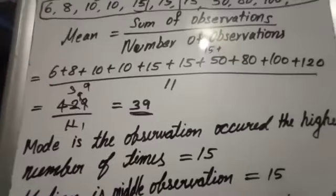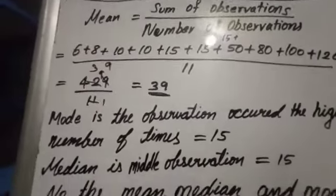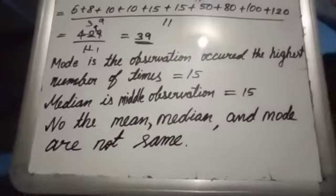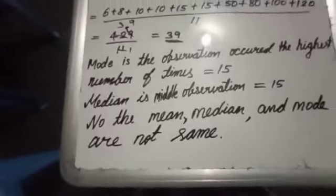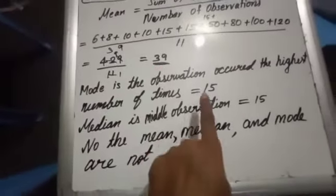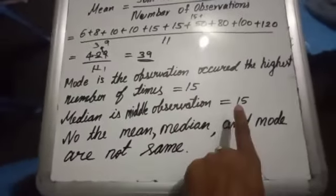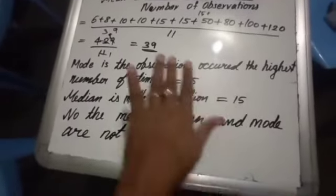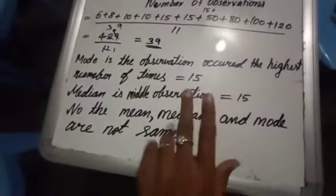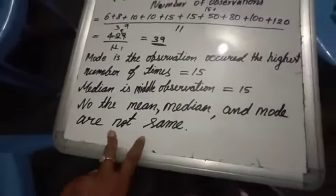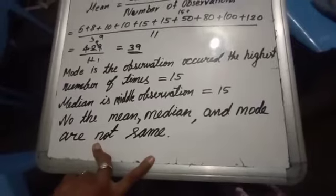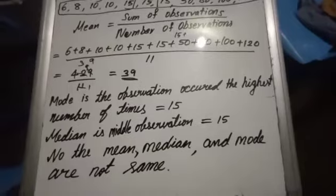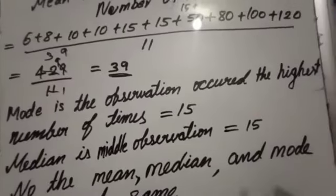At the end they have asked you the question, are the three same? So you have to answer for that. No, the mean, median, and mode are not same. Why? Because the mean we have got 39, the mode is 15, median is 15. Mode and median, they are same, but the mean is not same. So we conclude: No, the mean, median, and mode are not same. Hope you understood how to find out from one question all those three. Thank you my dear students.